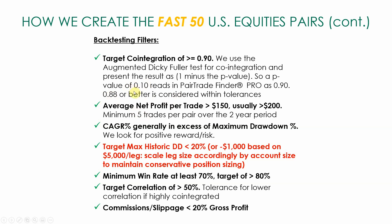Perfection is not always possible in trading. The average net profit per trade — we always look for greater than $150 based on $5,000 a leg, and usually greater than $200. We want a compounded growth rate in excess of maximum drawdown, and a target max historical drawdown of less than 20%. None of these pairs had a historical drawdown greater than 20%, which on a $5,000 leg means a loss of $1,000 on any one trade. Minimum win rate is at least 70%, with a target of greater than 80%. We want correlation to be over 50%, but the most important thing is co-integration. Commissions and slippage should be less than 20% of gross profit — we're trading for ourselves, not for our broker.